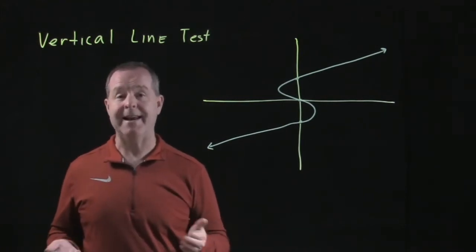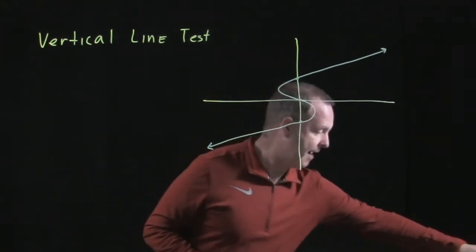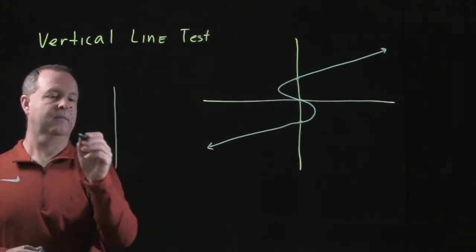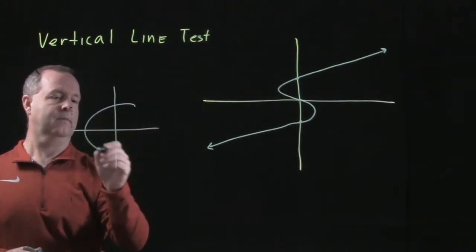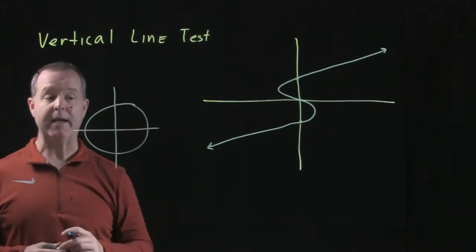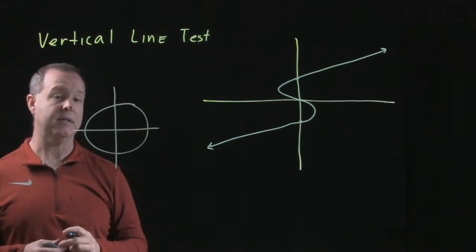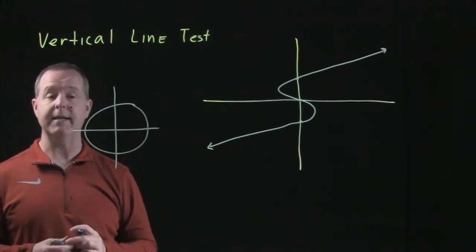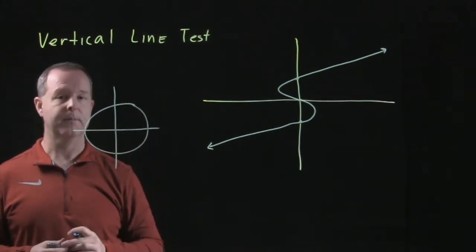So you can look at that on lots of graphs. A graph of a circle - that's a graph, we can identify that with an equation. But likewise, this graph of a circle fails the vertical line test. So therefore, a circle is not a function.